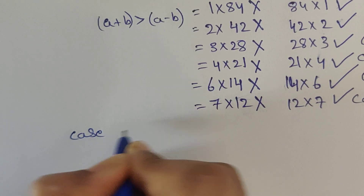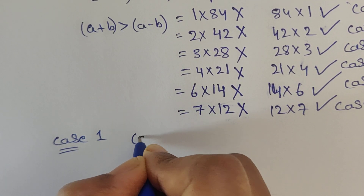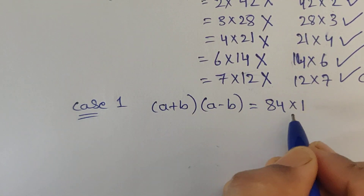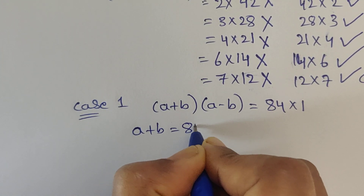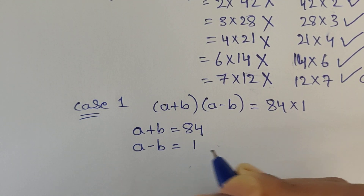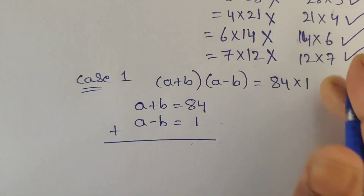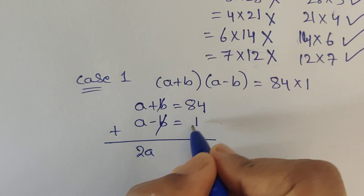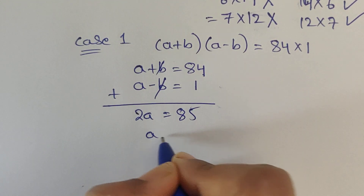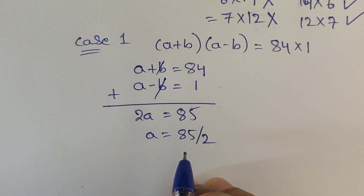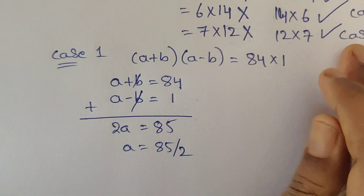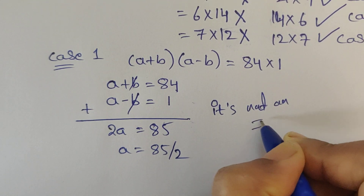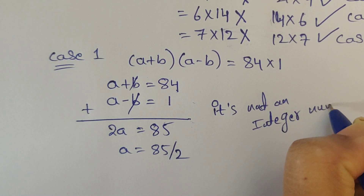Case 1: a plus b times a minus b equals 84 times 1. So we set a plus b equals 84 and a minus b equals 1. Adding these two equations, the b terms cancel, giving 2a equals 84 plus 1 which equals 85. So a equals 85 divided by 2, which is not an integer value — so this case is rejected.